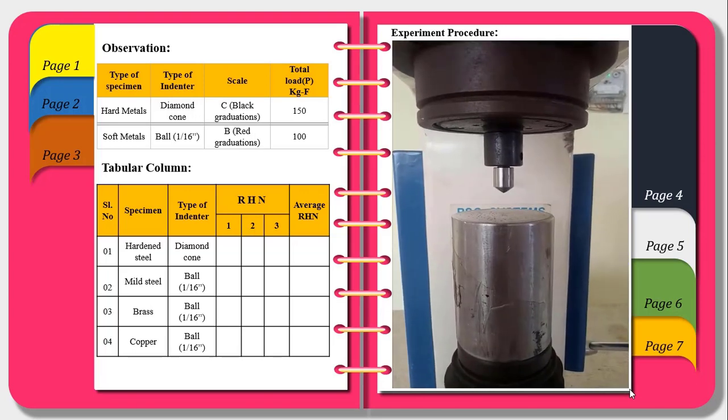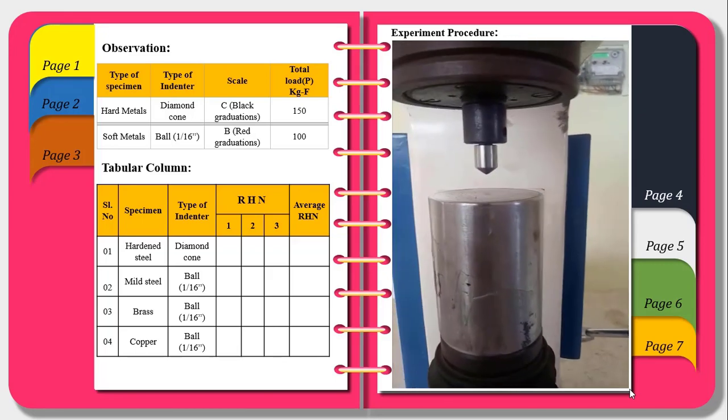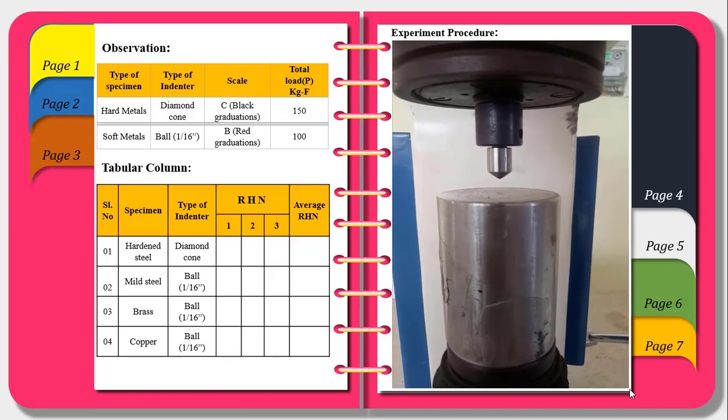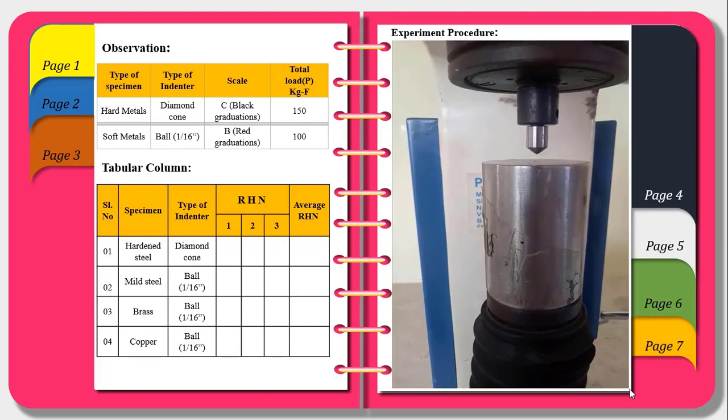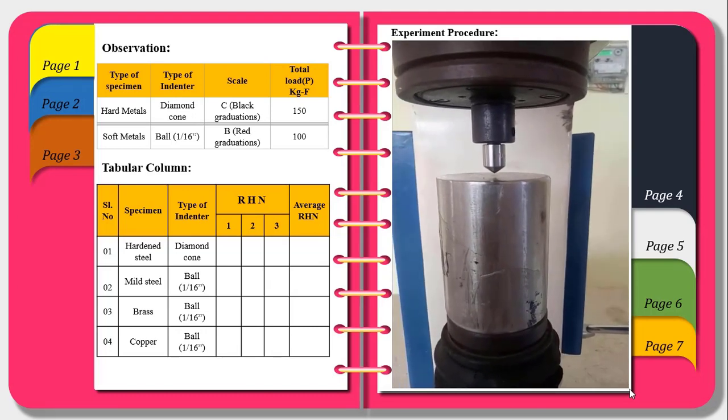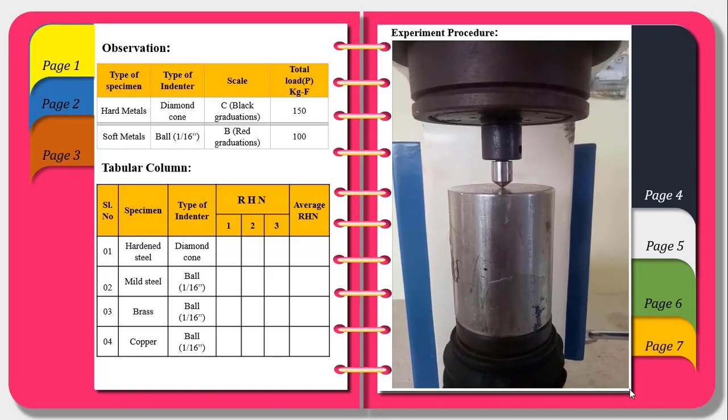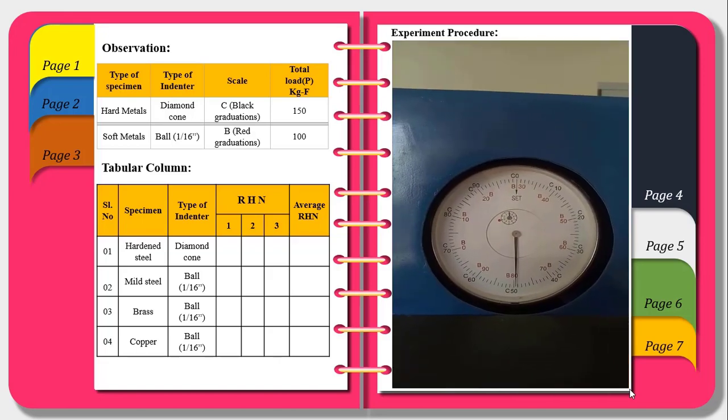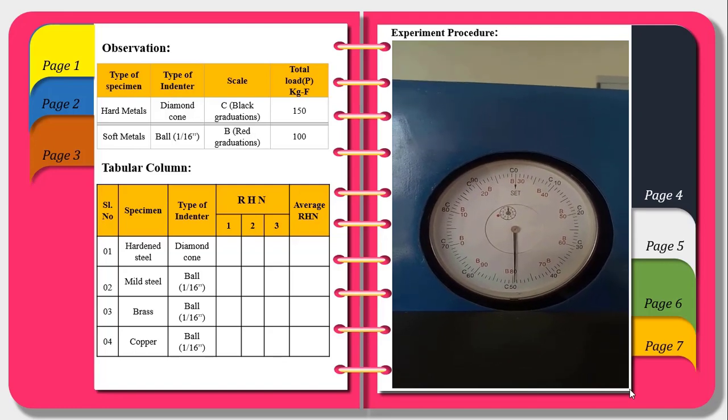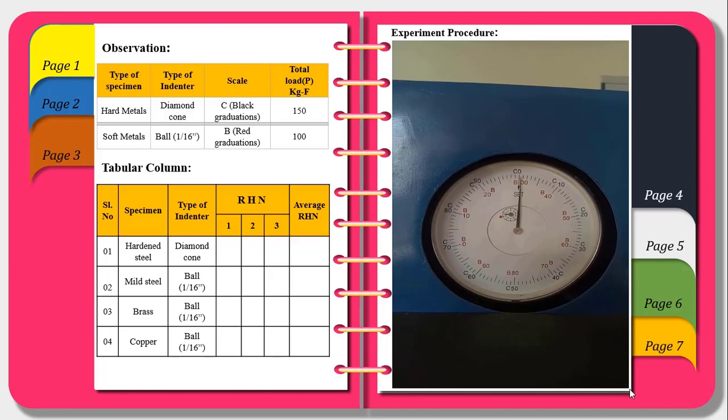Next I will turn the loading lever and turn the anvil to raise the job until it touches the indenter tip. And we should continue turning until the small pointer reaches a red spot at point 3 or a red point. This is automatic zero setting dial gauge.